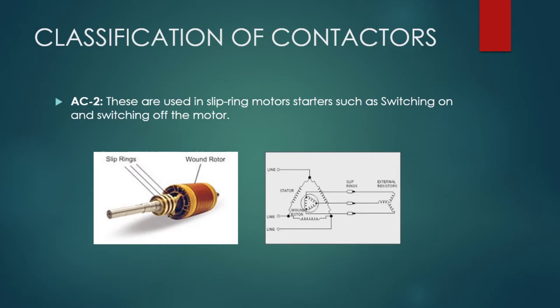AC2 contactors are used where high current is needed, such as in industries using slip ring motors in printing machines, steel mill sectors, conveyor processes, compressors, and manufacturing companies. The main feature of the slip ring motor is its external resistance, which provides very good starting torque current.